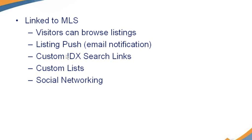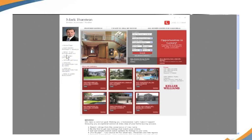On the custom lists, the property listings always stay — the status might change, the status will change. If you're in an MLS that supports propagating pending and sold data, the status will change. If you're in an MLS that doesn't support pending and sold data, unfortunately those listings will just disappear.